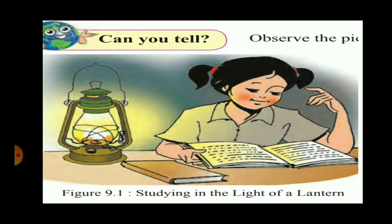In figure 9.1, this is an activity — observe the figure and answer the question. In this figure you can see a girl studying in the light of a lantern. The question is: which energy resource is used to obtain the light? The energy resource here is kerosene, which is used in this lantern.